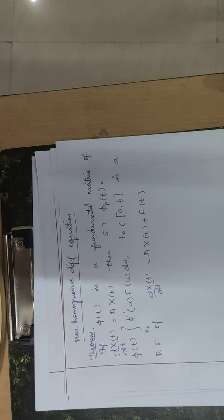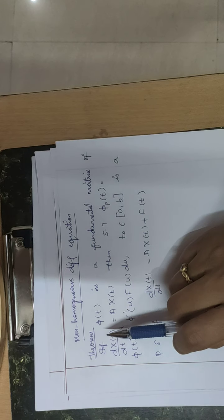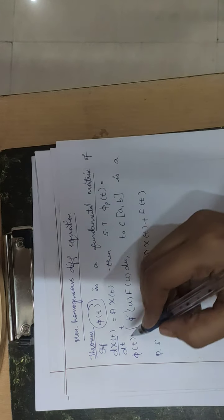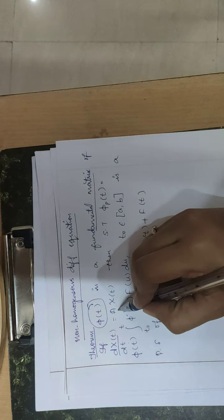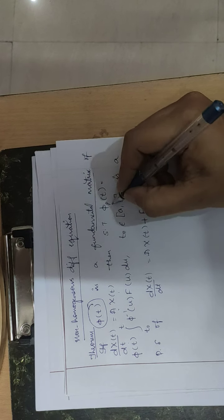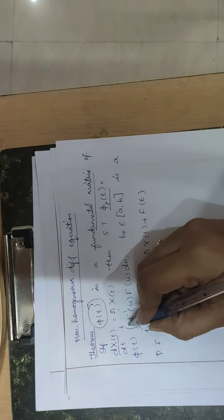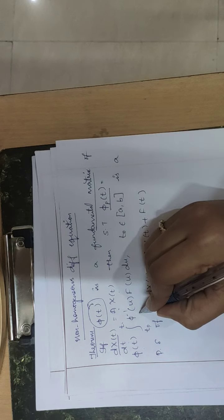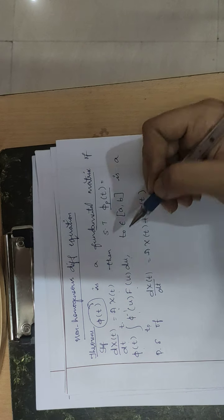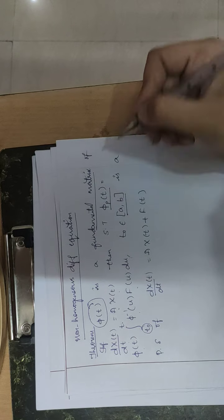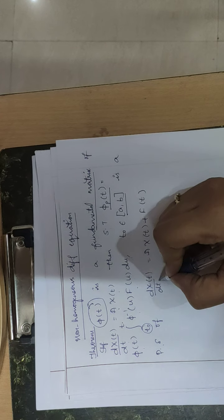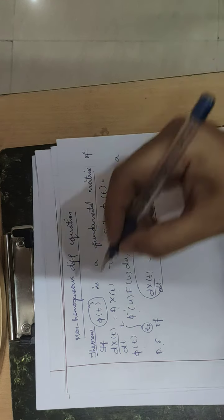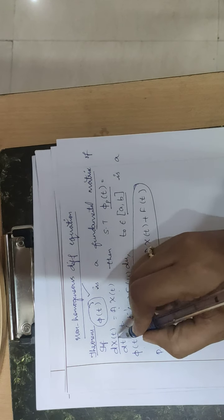In this topic we have a theorem. The theorem statement says that if phi of t is a fundamental matrix of dx(t)/dt = A·x(t), then phi_p of t equals phi(t) times the integral from t₀ to t of phi inverse of u times f(u) du, where t₀ belongs to the interval (a, b).